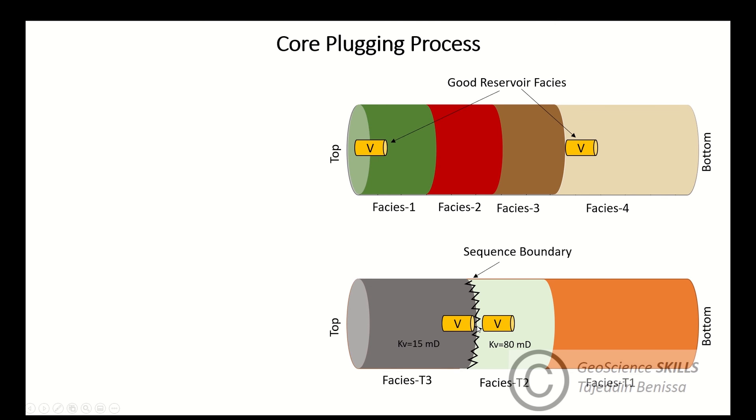A sequence boundary is defined as a chronological surface that separates two different geological phenomena that occurred at different times. Why is it important to take vertical plugs below and above sequence boundaries?